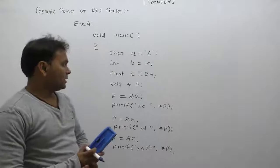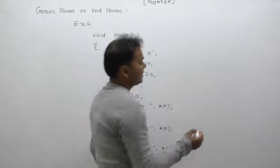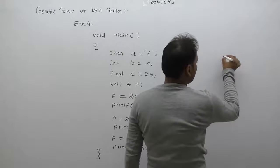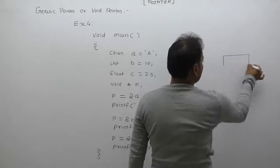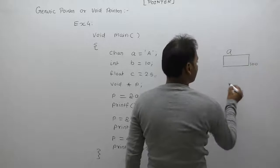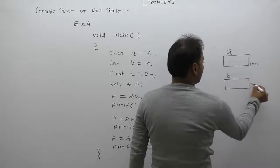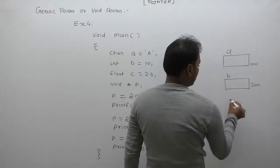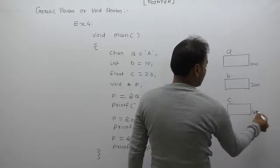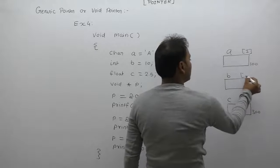We are discussing void pointers. In this case we are declaring three different types of variables a, b, and c. What is the size of a? Size of a is one byte. Here's my simple memory diagram, not a stack diagram. Variable a has address 100, variable b has address 200, variable c float type has address 300.